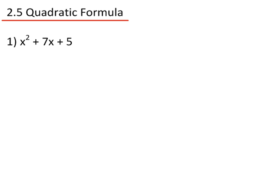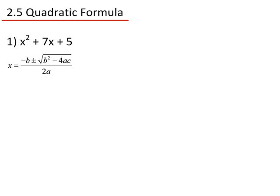Example 1: x² + 7x + 5. First we need to identify a, b and c. So a equals 1, b equals 7 and c equals 5. Now the quadratic formula is minus b plus or minus the square root of b squared minus 4ac, divided by 2a.